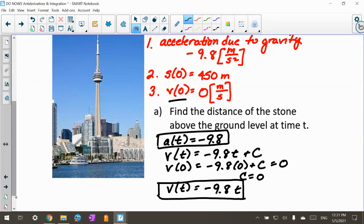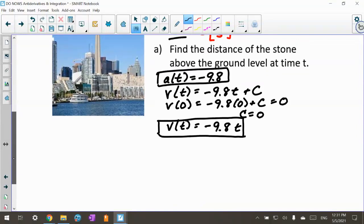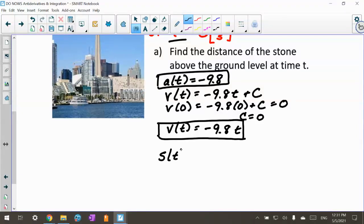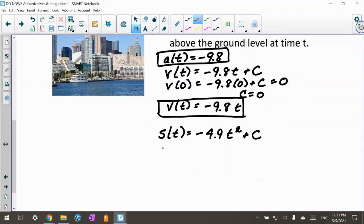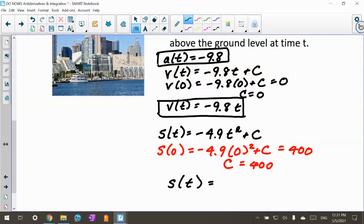Now we're looking for our position. We're going to do the antiderivative again. Our position function is negative 4.9t squared plus c. We knew that s(0) is 450, so I can plug in s(0) equals negative 4.9 times 0 squared plus c, and it equals 450. So c is 450, and our position function is s(t) equals negative 4.9t squared plus 450.